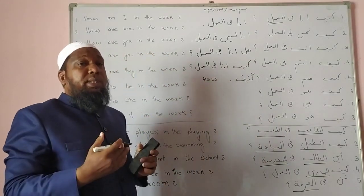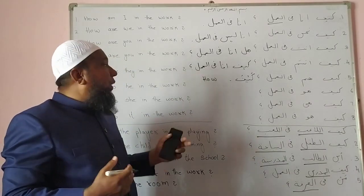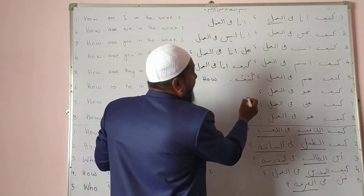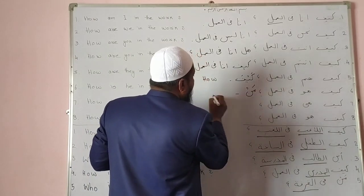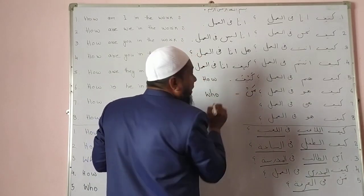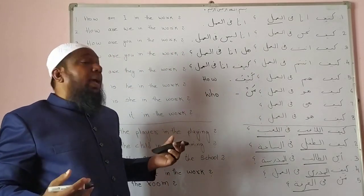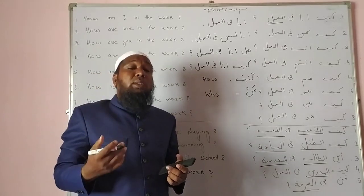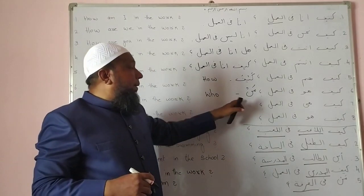Before the sentence, we add the interrogative word. If you want to ask 'how,' we use Kaifa — kaisa hai. Another interrogative word is Man, which means 'who' — kaon hai? For example: Man rabbuka — Who is your Lord? — Tumhara rab kaon hai? That word is Man.